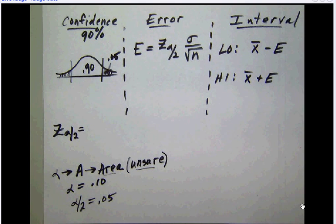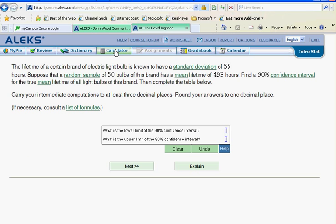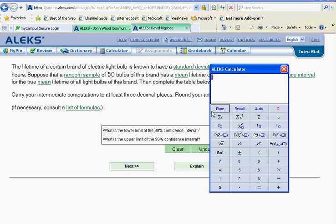What we're simply going to do is hop back to our ALEKS calculator. We are going to hit the Z button. We're going to put in 0.05 because that is half of the area that you're unsure of, and calculate the value.